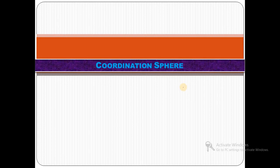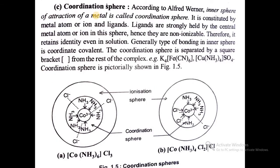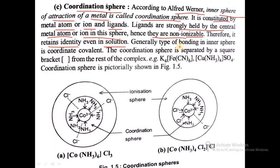The coordination sphere represents the coordination number, or secondary valency, and is also called the inner sphere or non-ionizable sphere. According to Alfred Werner, the inner sphere of attraction of a metal is called the coordination sphere. It is constituted by the metal atom or ion and ligands. Ligands are strongly held by the central metal atom or ion, and hence they are non-ionizable. Therefore, it retains its identity even in solution. Generally, the type of bonding in the inner sphere is coordinate covalent bonding.